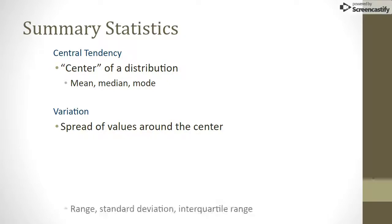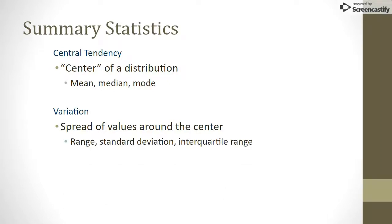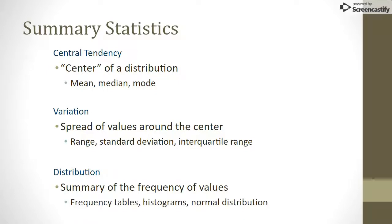Some common methods for analyzing variation are the range, standard deviation, and interquartile range of the data set. We'll talk more about variation in the next lesson. Distribution helps us understand even more about how data is spread out within a data set. Graphical tools such as frequency tables, histograms, and other graphs can help us visualize how a collection of data is distributed. We'll take a closer look at distribution in part 3 of this series.